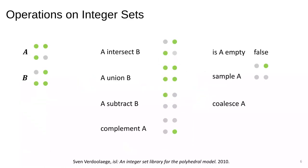We support the basic set operations like intersection, union, subtraction and complement. We also support the operation of checking whether a set is empty and finding a point in the set if one exists. These are important in polyhedral compilation. Additionally, we also support the coalesce operation which simplifies the internal representations of sets.